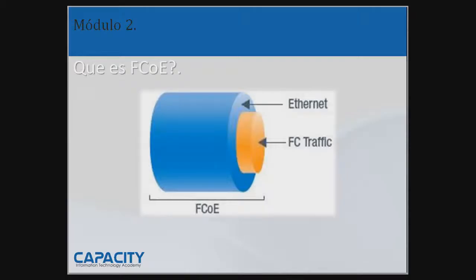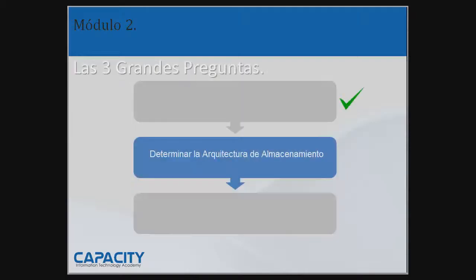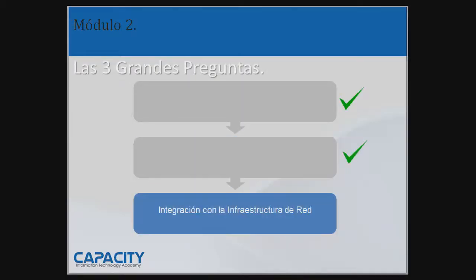Debido a que Fibre Channel over Ethernet fue diseñado para ser compatible con Fibre Channel, este actúa y se comporta como canal de fibra en ESXi. Básicamente, lo que les estoy diciendo es que la selección del hardware del servidor es importante, pero también lo es determinar toda la solución de almacenamiento. Con esto cubrimos la segunda parte. Pasemos pues a la tercera parte, que es la integración con la infraestructura de red.